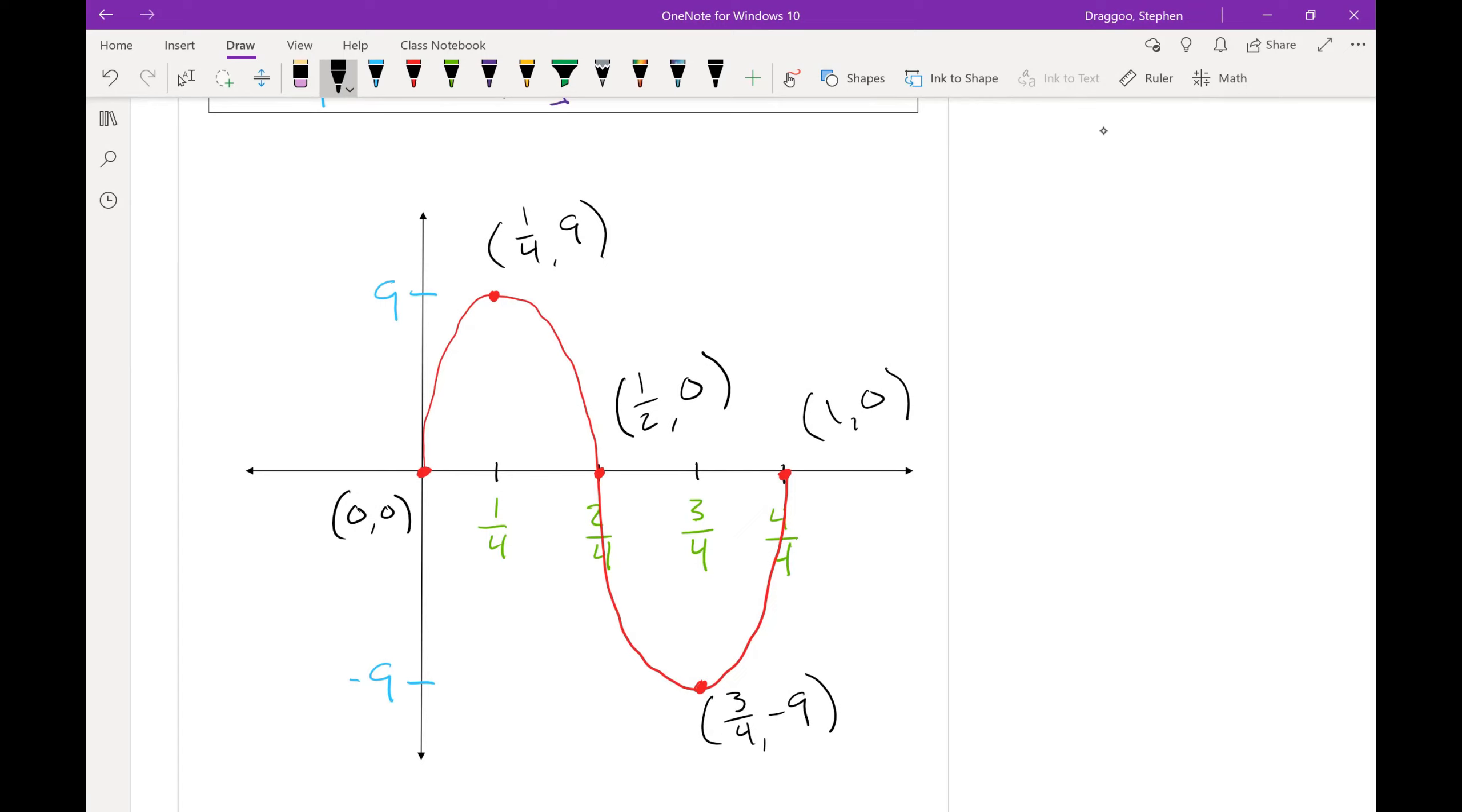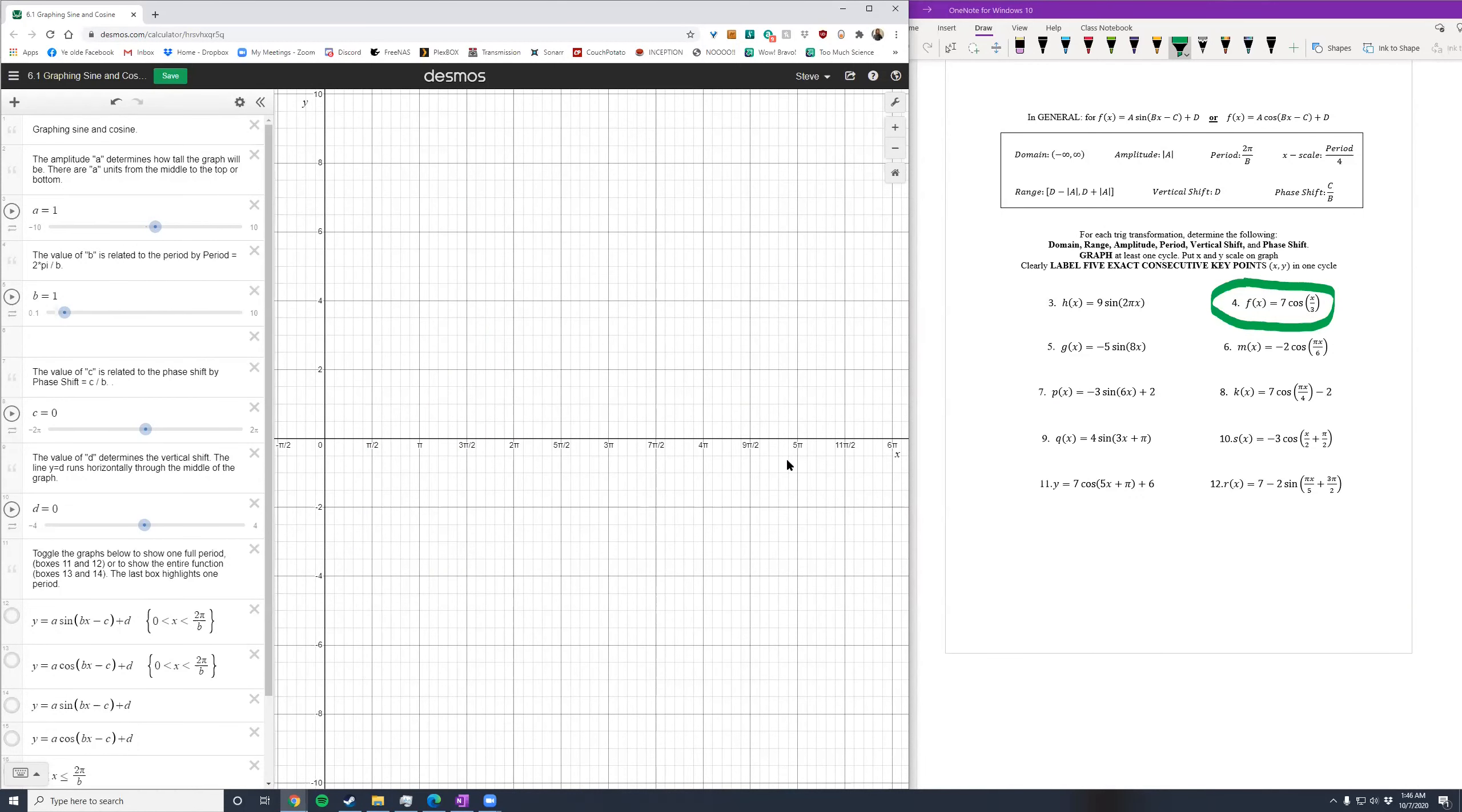And that's my graph. Problem four. I'm looking at seven cosine of x over three, we'll turn on cosine, move a up to seven, and b down to one third. This is our transformed graph of cosine.